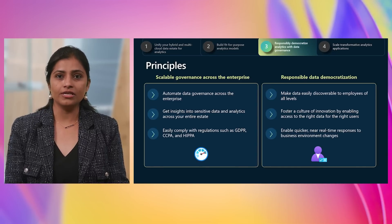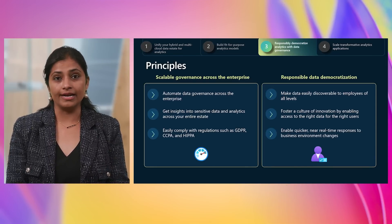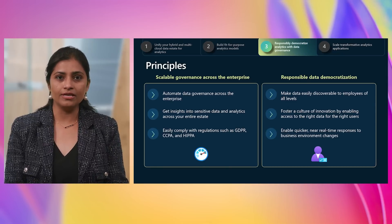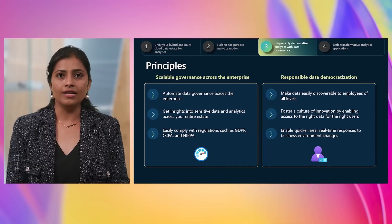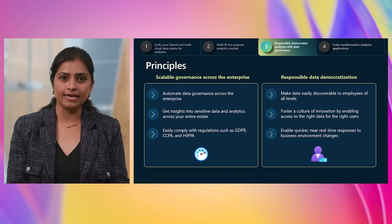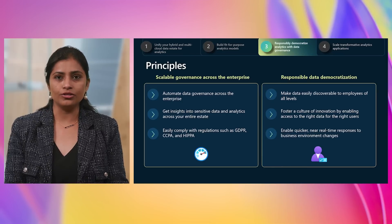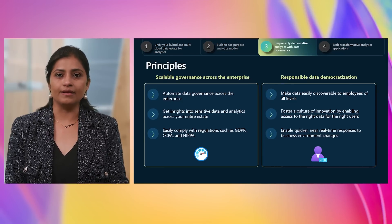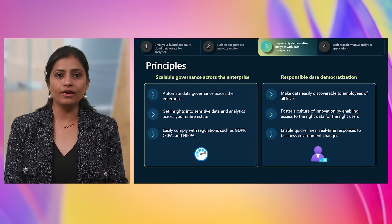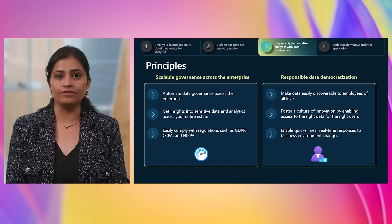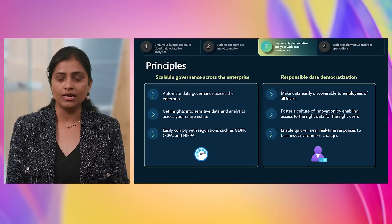Data governance is a foundational pillar that fosters a data culture by enabling access to the right data for the right users. When you automate data governance across the enterprise, you can easily comply with regulations like the General Data Protection Regulation (GDPR), HIPAA, and more. You will start gaining insights into sensitive data and analytics across your data estate. Responsible data democratization makes data easily discoverable, and with the right access control, you will enable the right users to consume the right levels of information, providing near real-time responses with business changes.